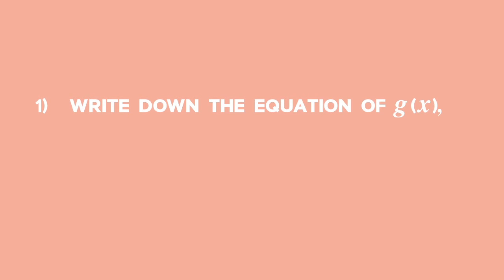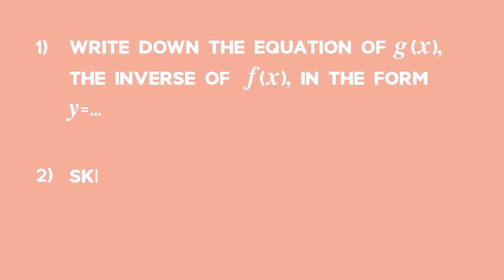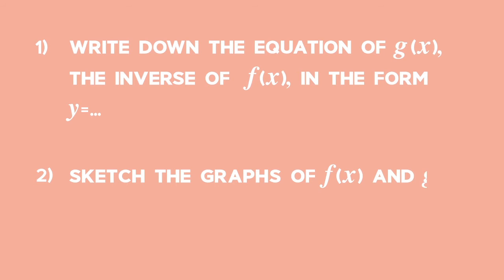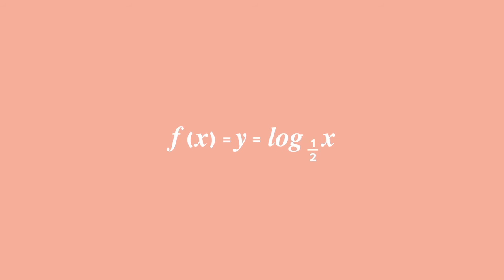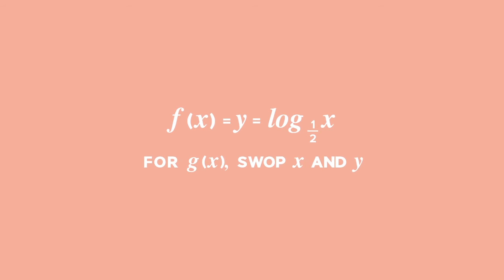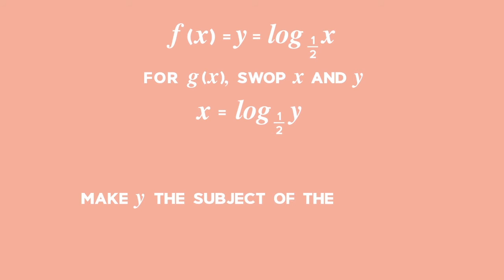Let's work through this example. If f of x equals log base half of x, number one, write down the equation of g of x, the inverse of f of x, in the form y equals. Number two, sketch the graphs of f of x and g of x on the same set of axes and label all intercepts with the axes. To find the inverse of y equals log base half of x, we swap x and y, so x equals log base half of y. We can make y the subject by converting to exponential form, and we get y equals one half to the power of x.